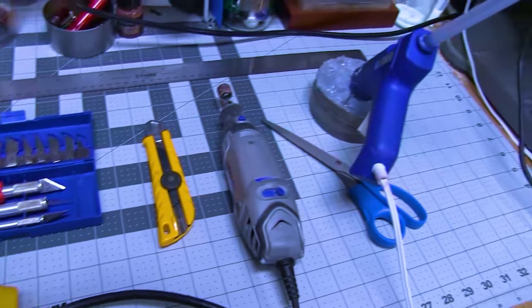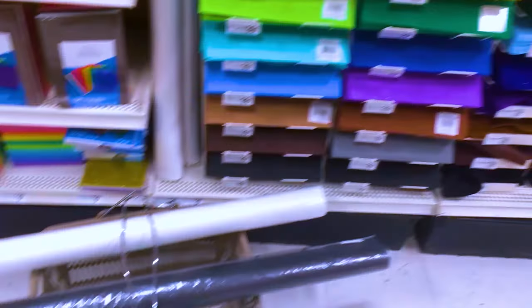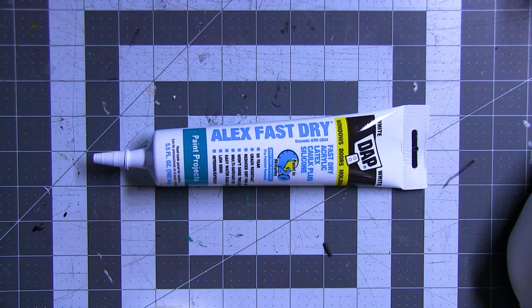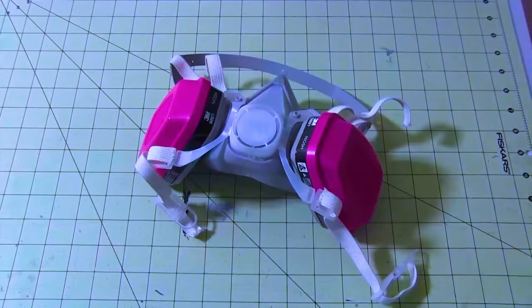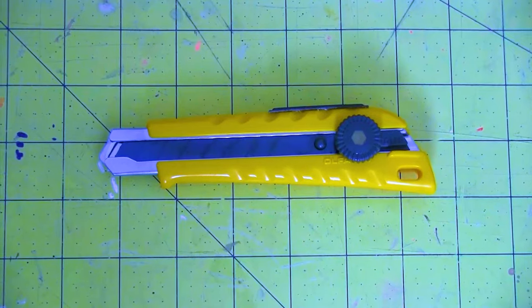For this build, I used EVA foam, craft foam, coffee foam, putty, paint, super glue, hot glue, cutting tools, sanding tools, safety gear, scissors, razor pens, and a box cutter.